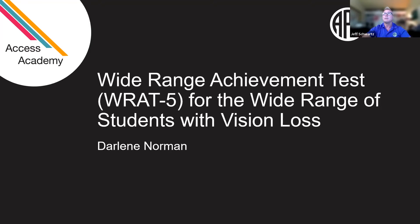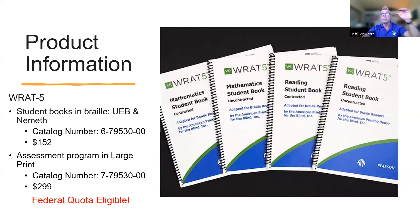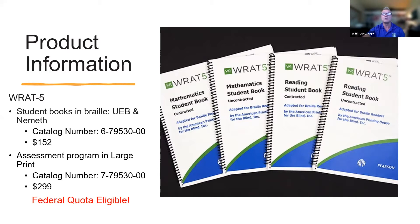Today we're going to be talking about the RAT5. The product information is on screen now. The RAT5 student books are available in Braille, both in UEB and NEMET. The catalog number is on screen at a cost of $152. The assessment program in large print is also available, catalog number included on our slide. Both of these items are available through federal quota funds.